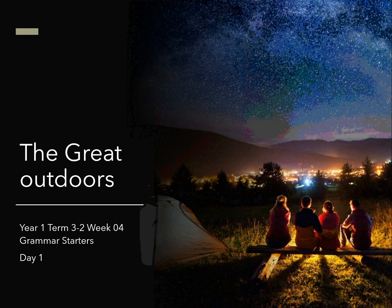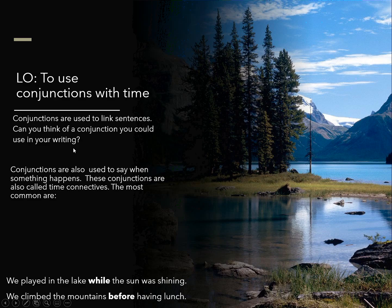There you can see people camping, looking down on the city in the great outdoors. Today we're going to be looking at how you can use conjunctions in the great outdoors. We're going to look at using conjunctions with time conjunctions, used to link sentences. Can you think of a conjunction you could use in your writing? Try to think of all those conjunctions we used last week, then pause the video and start it again when you're ready.